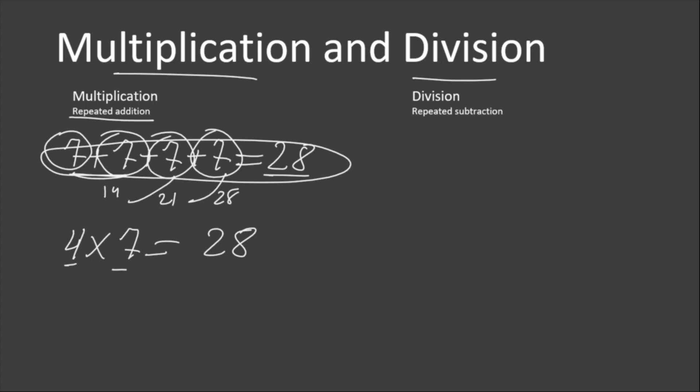In multiplication, the two numbers which are multiplied are called factors, and the result that we get is called product. This is about multiplication.